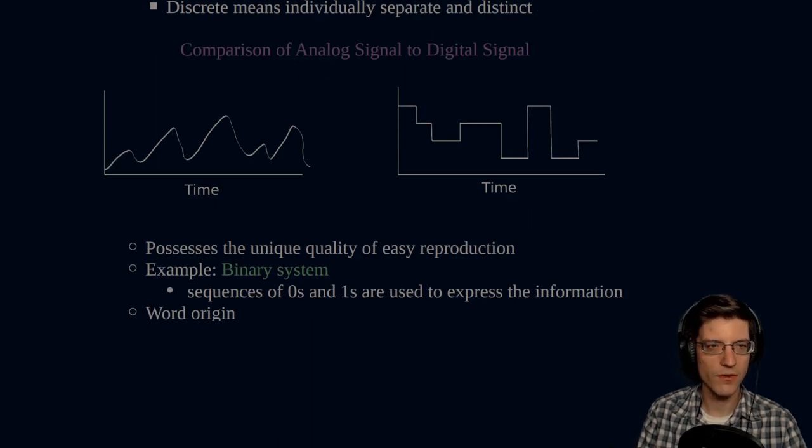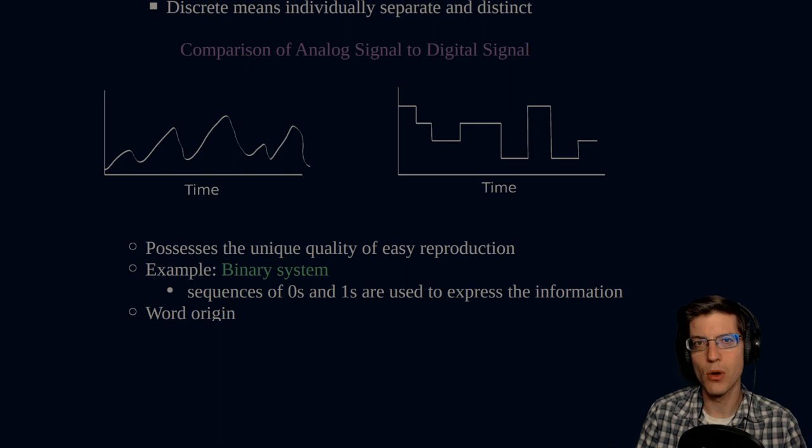Think of the values 0 through 9. 1 cannot be 2. 2 cannot be 3. 3 cannot be 0. 0 cannot be 9. Each of these values has a very characteristic quality that cannot be changed. That's what the meaning of discrete is. And just to show you the difference between an analog signal and a digital signal. So digital stands as opposed to analog.